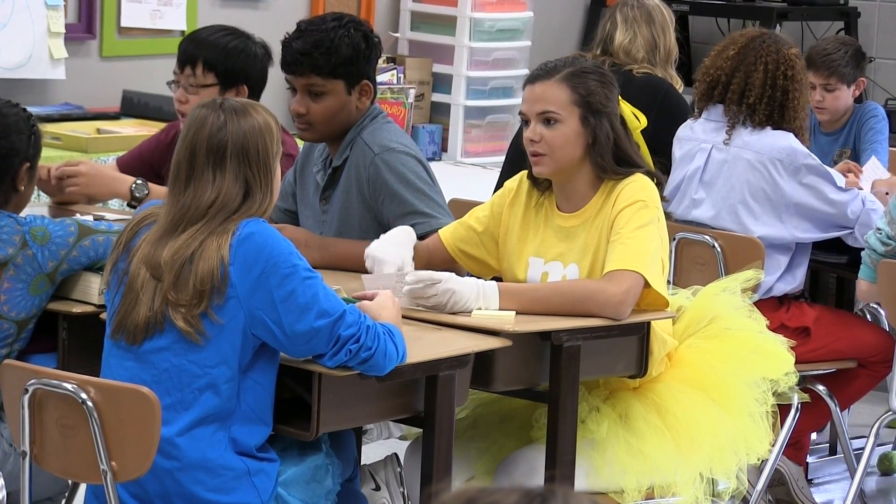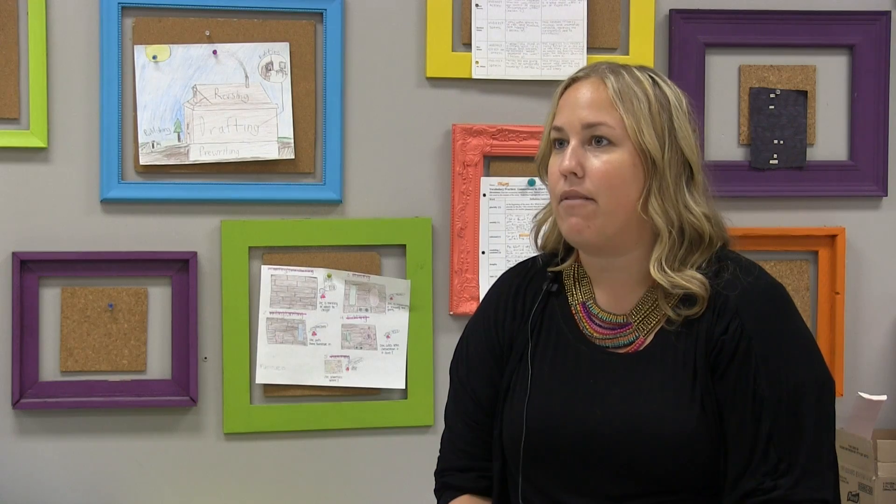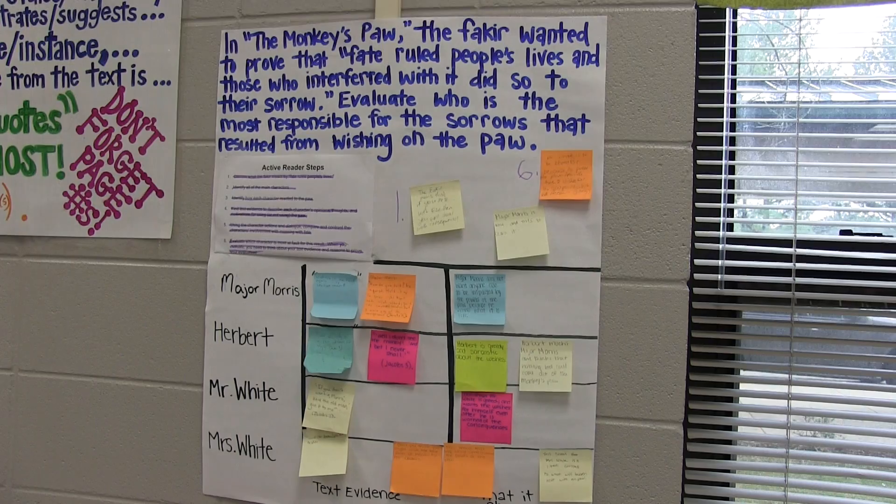Each time they rotated they could look at what the other group had already written — they could agree, disagree, add text evidence, add a connection, or ask a question. Even though they were in smaller groups, they were actually interacting with everyone in the classroom because at some point each student would be at every station. I chose think-ink because I really wanted to focus on higher order thinking skills without the pressure of a whole group setting.